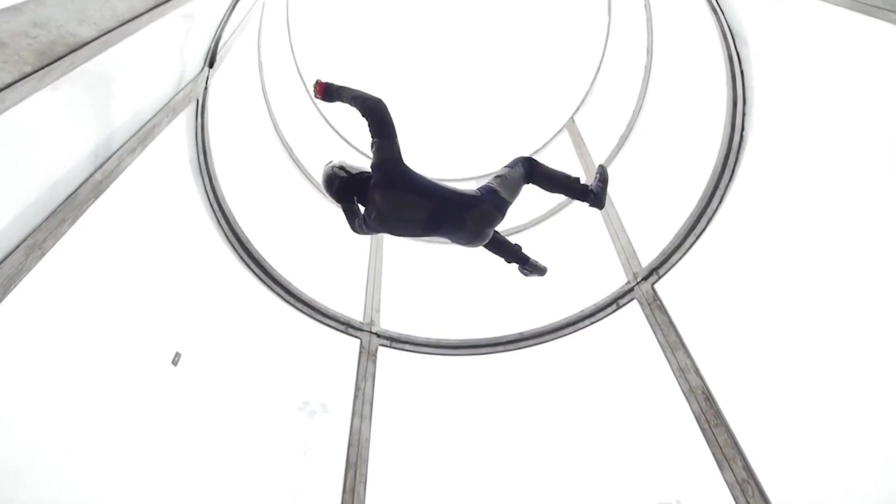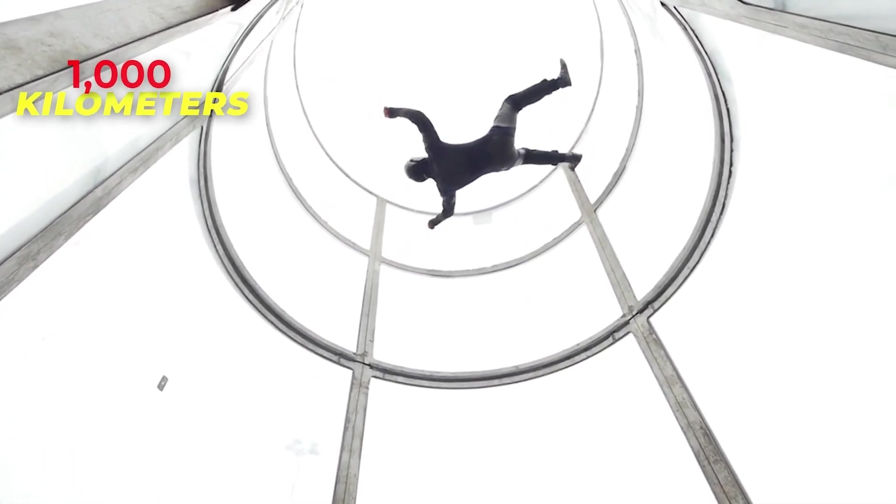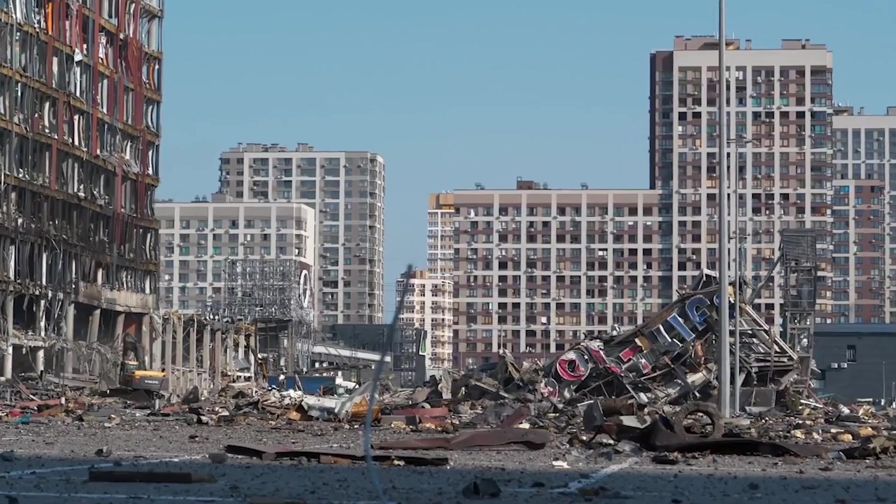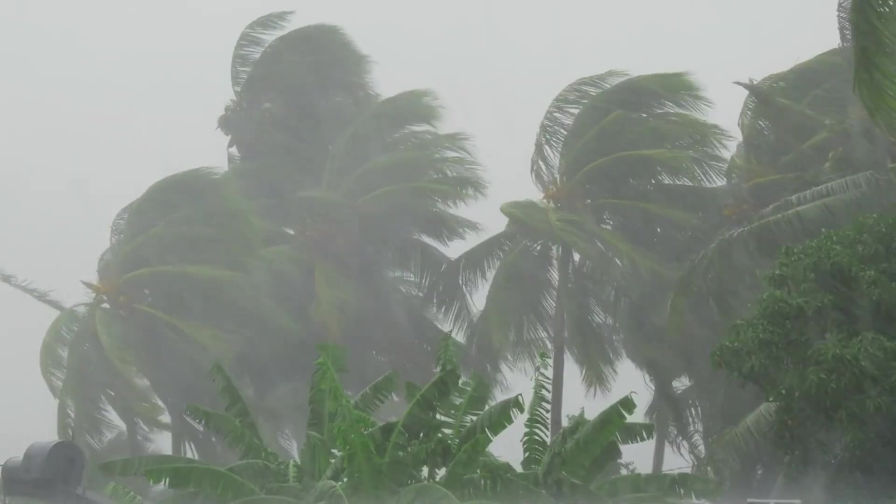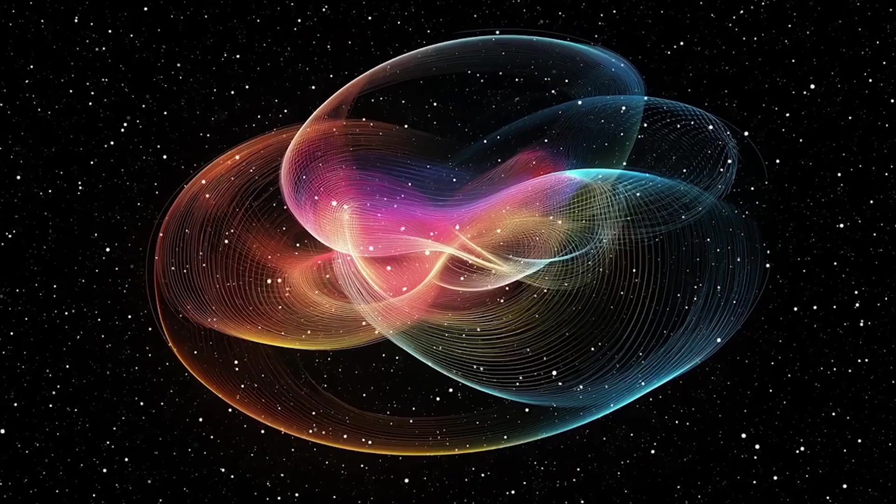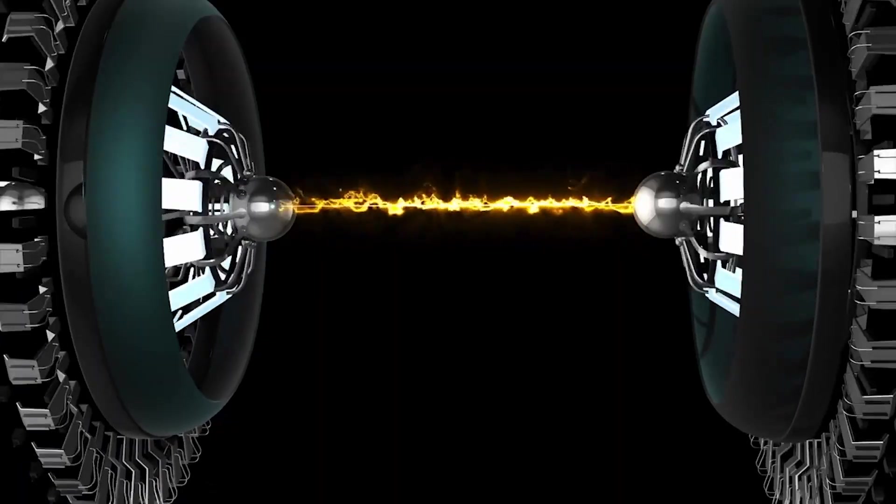In an instant, every object not bolted to the ground would continue moving at over 1,000 kilometers per hour. Oceans would sweep across continents, buildings would collapse, and the air itself would become a deadly wall of force. That's inertia. The same force you'd have to overcome to accelerate gradually to light speed without turning into paste. So let's say our ship has solved that too. We have perfect inertial dampeners and infinite energy. The engines ignite.